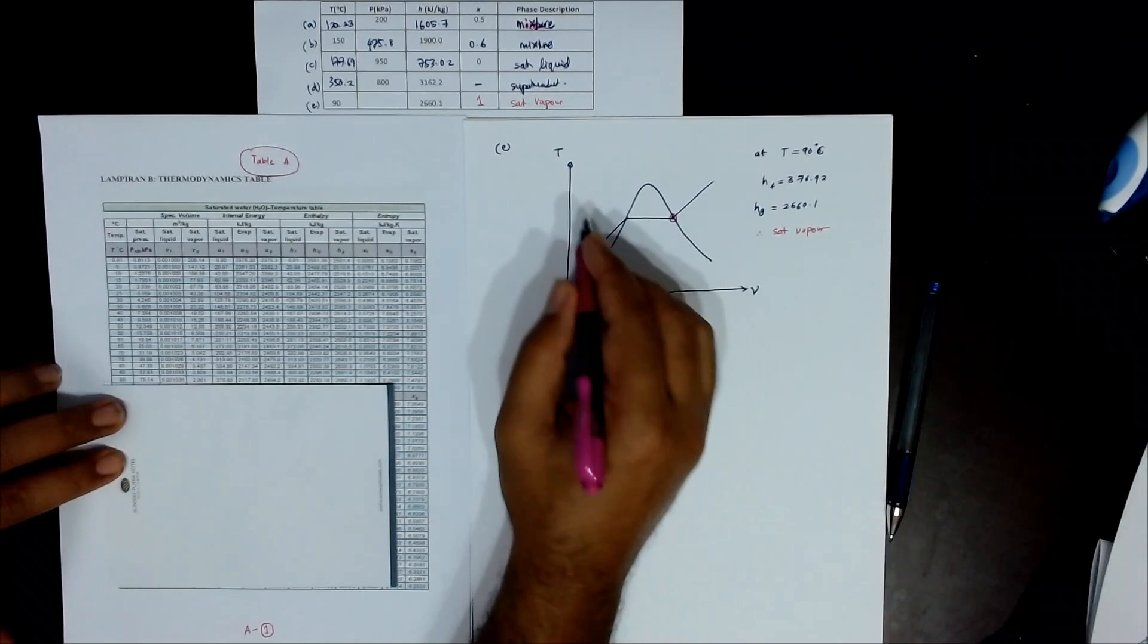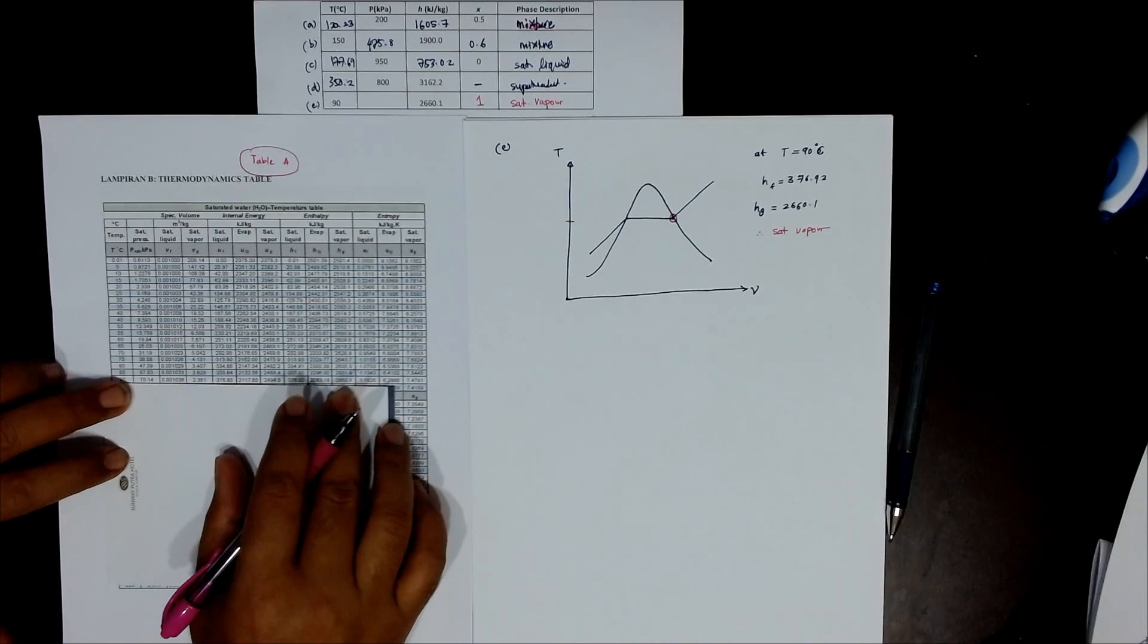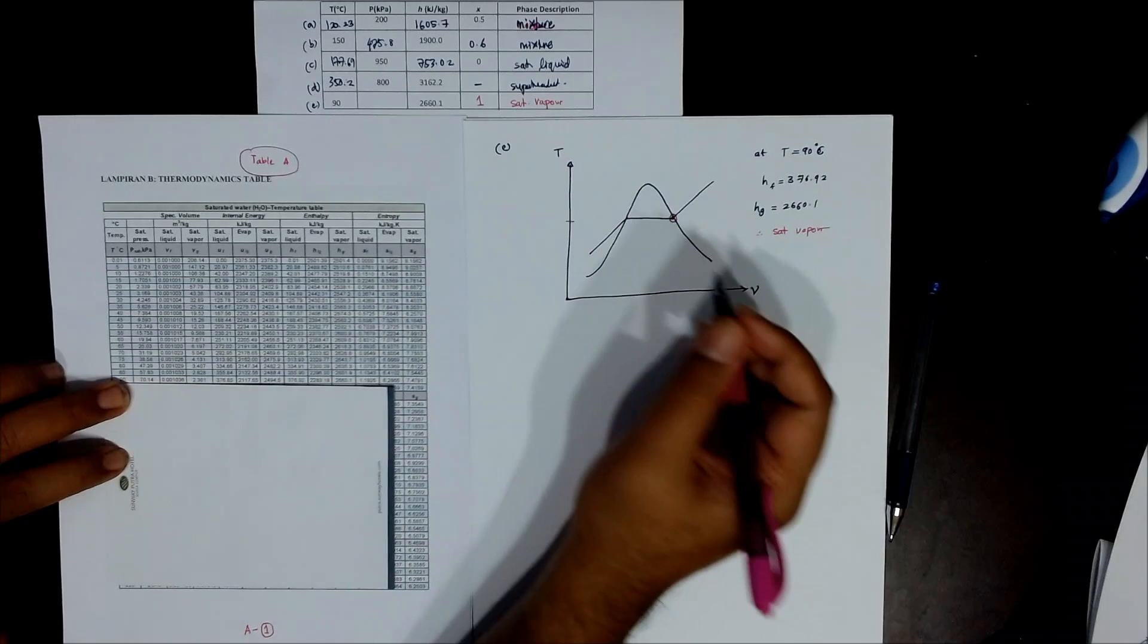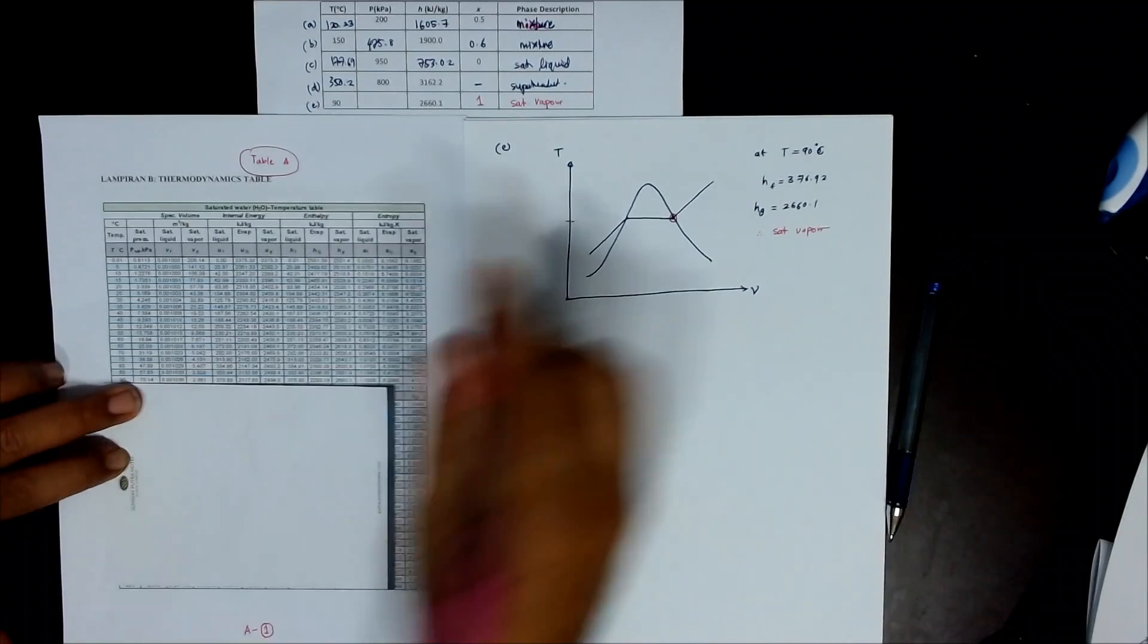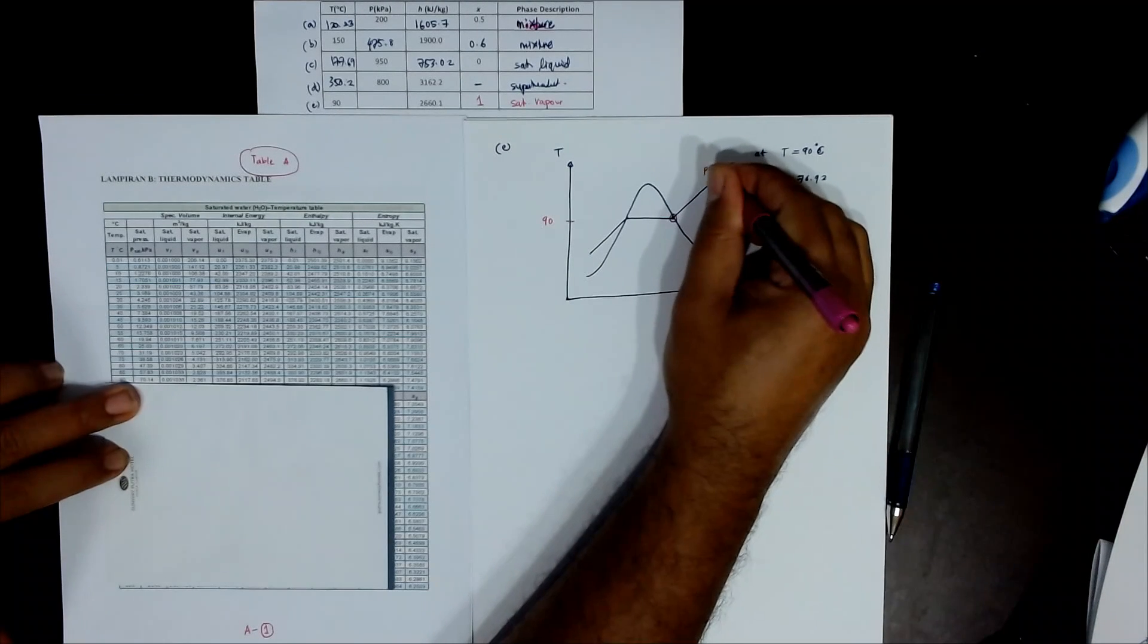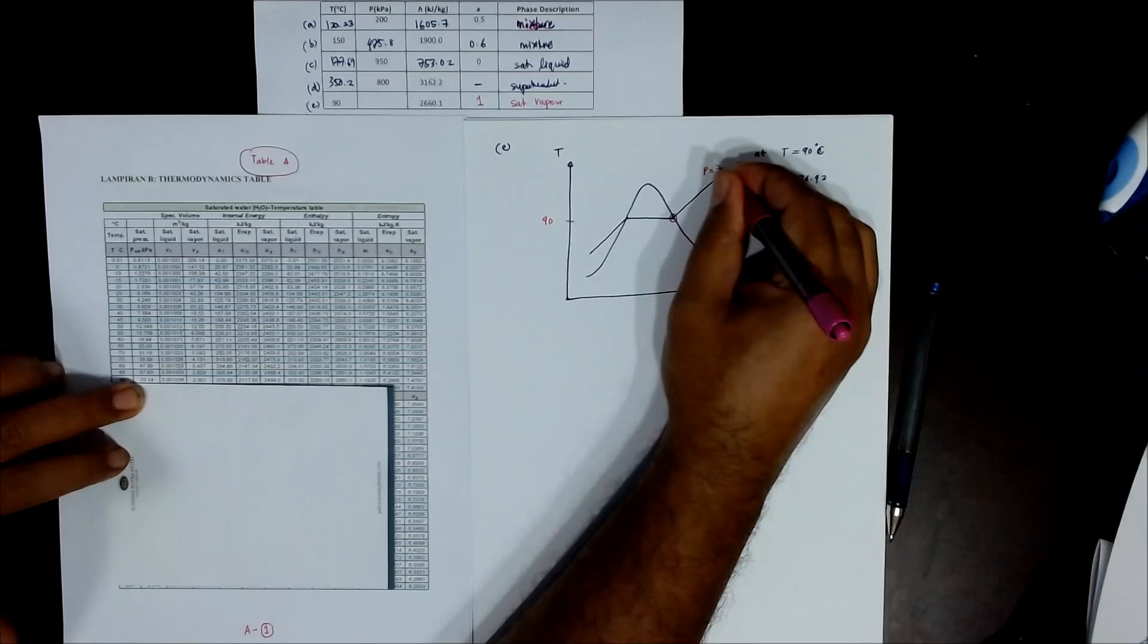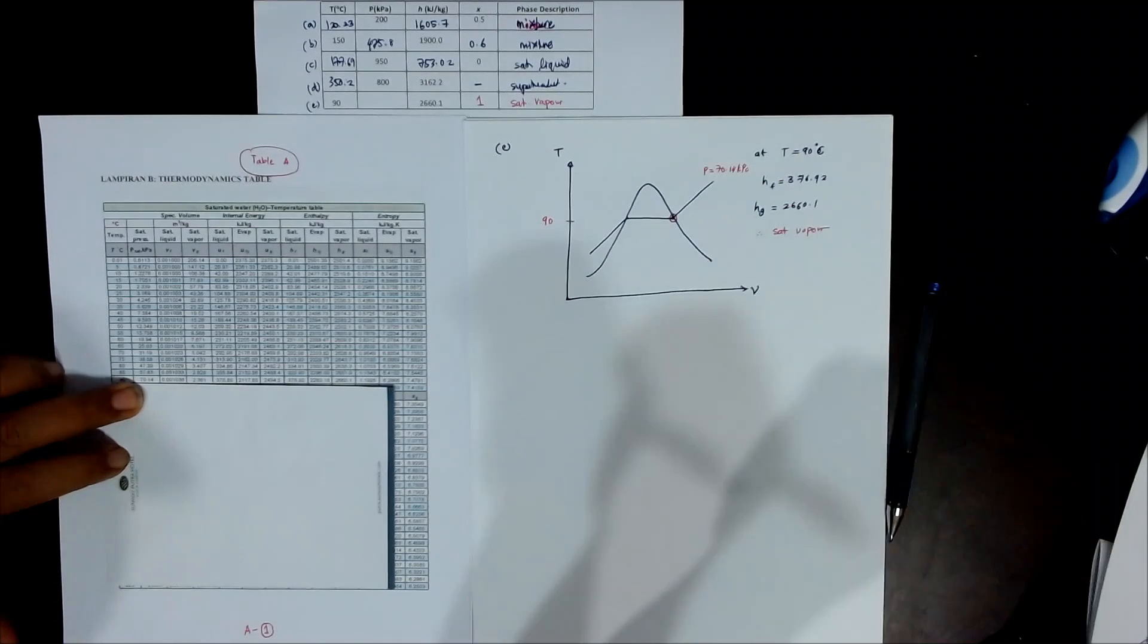Because it's on the same line, you can simply read from the table. 70 point... no, the pressure is what? 70, this one is 90 degree, P equals to 70.14 kilo Pascal. That's it.